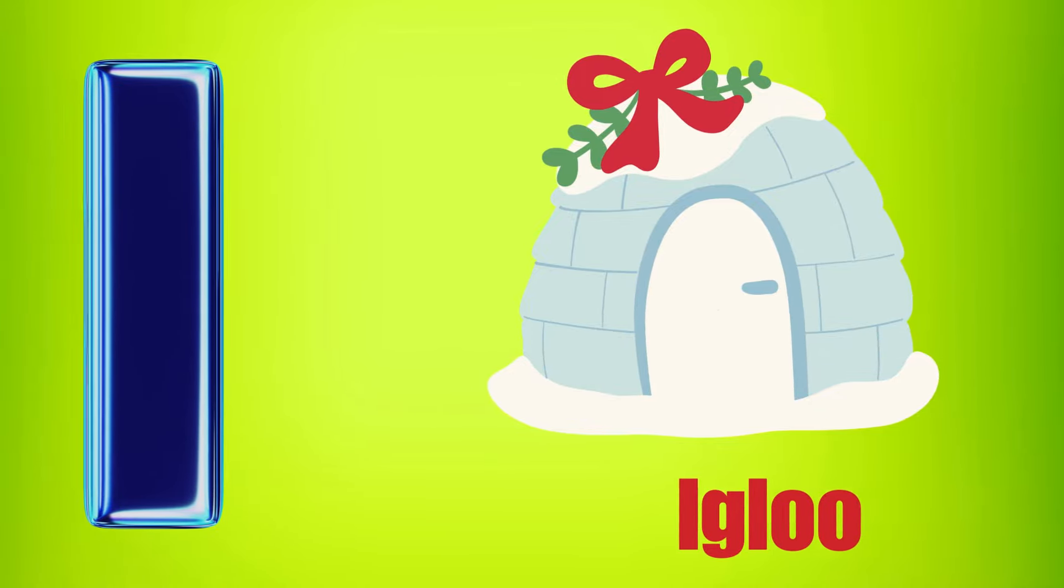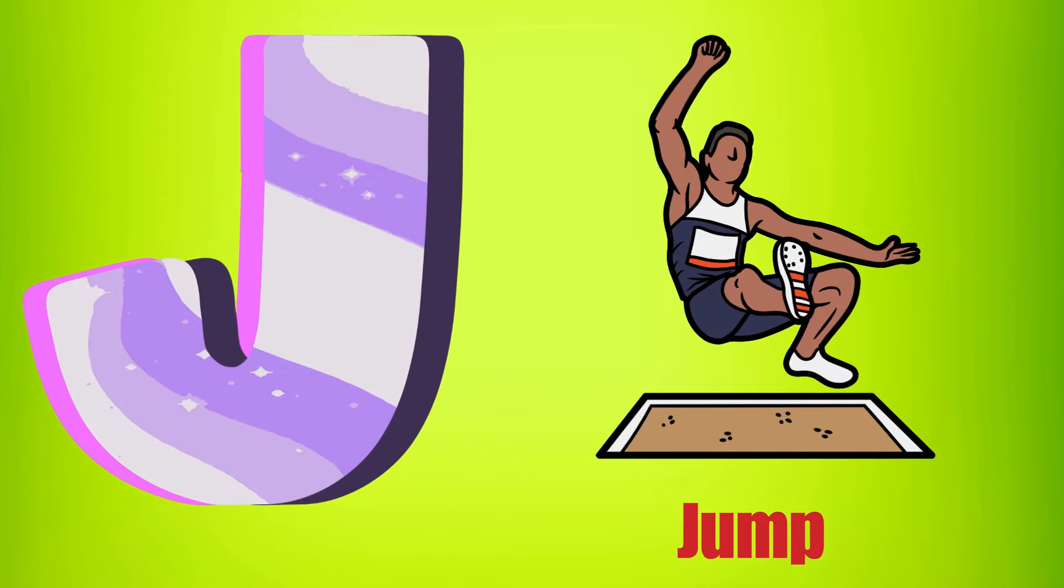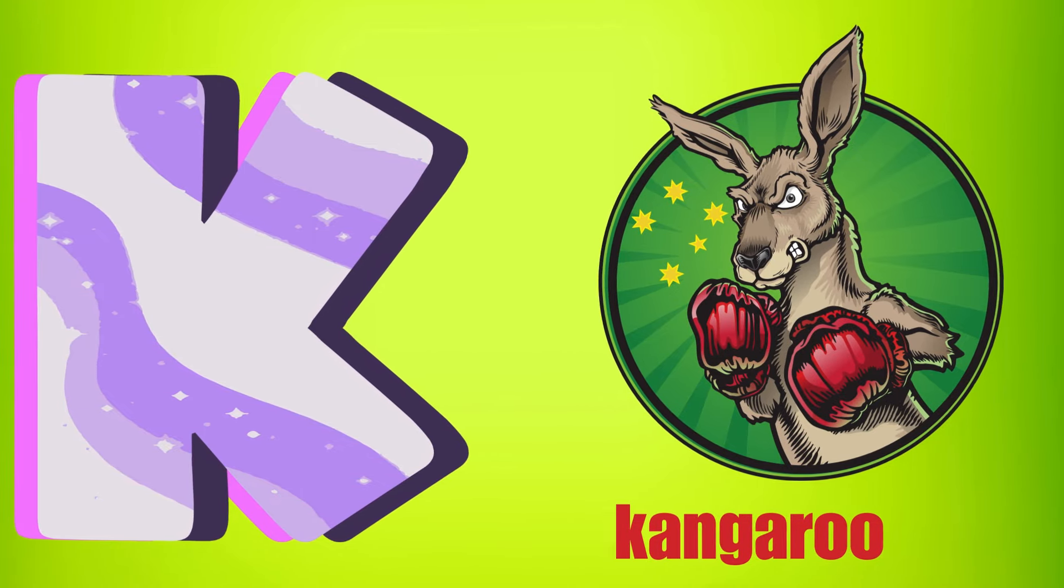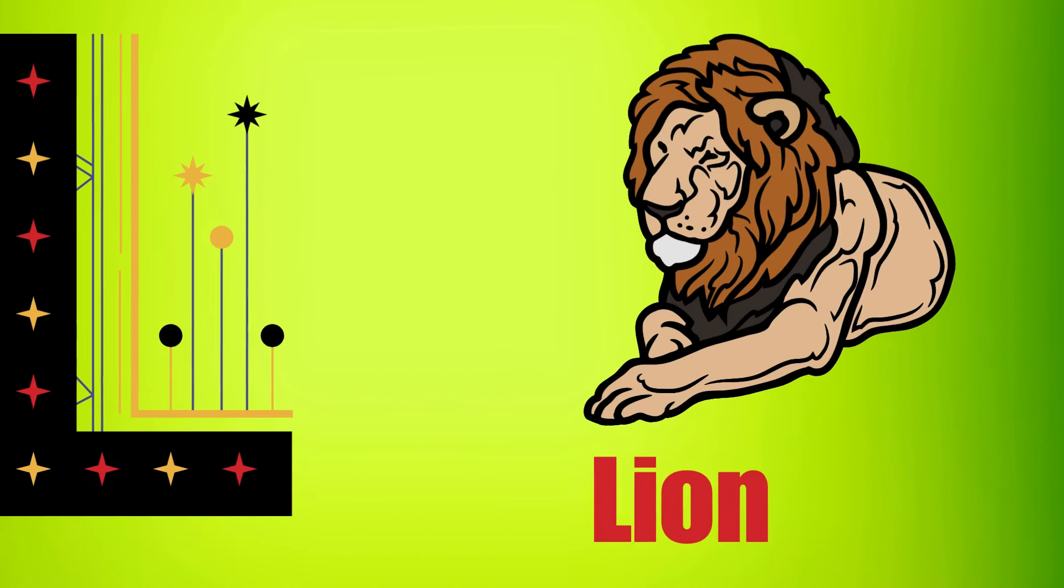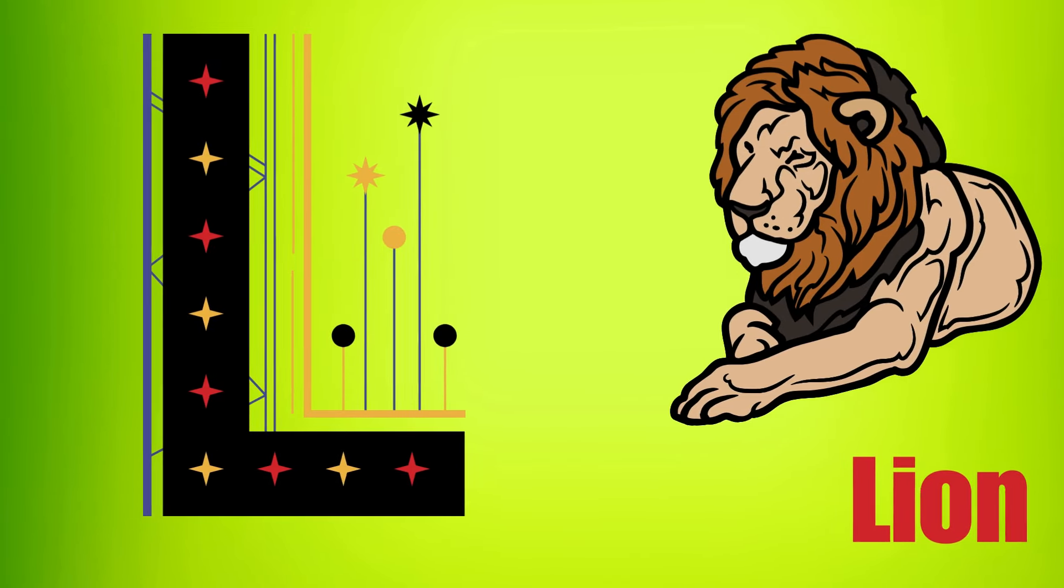I is for Igloo, I-I-Igloo. J is for Jump, J-J-Jump. K is for Kangaroo, K-K-Kangaroo. L is for Lion, L-L-Lion.